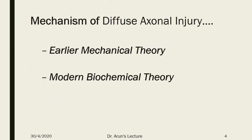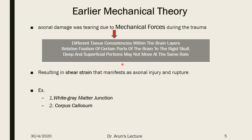When talking about the mechanism of diffuse axonal injury, there are two theories: the earlier mechanical theory and the modern biochemical theory. In the earlier mechanical theory, axonal damage was a tearing due to mechanical force during or in the aftermath of a trauma.